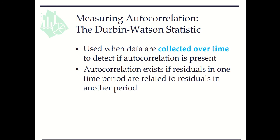In this video clip, we learn how to use the Durbin-Watson statistic to measure autocorrelation in regression. This method is used when data are collected over time for detecting autocorrelation. Autocorrelation exists if residuals in one time period are related to residuals in another time period.